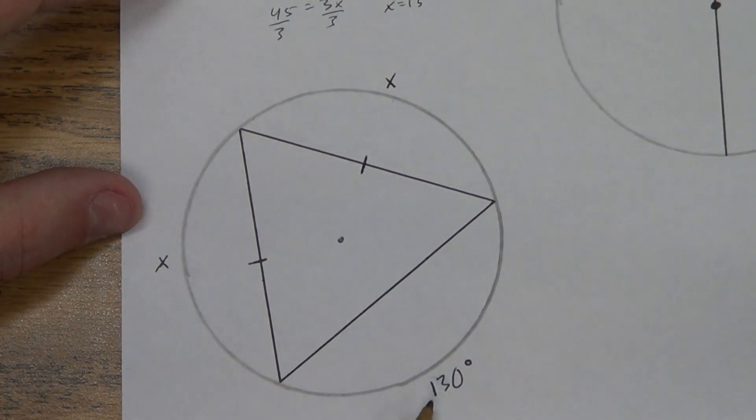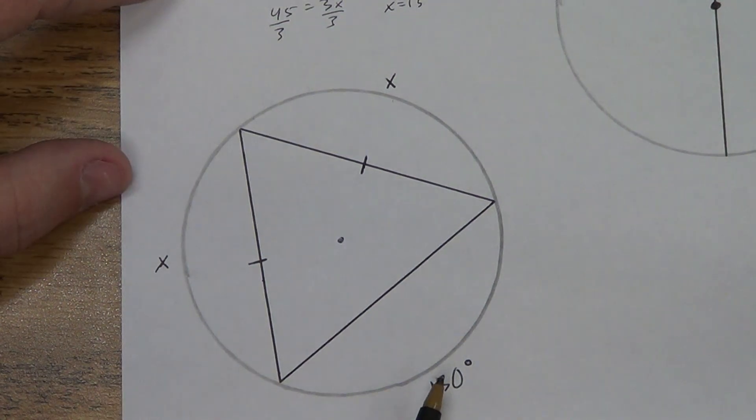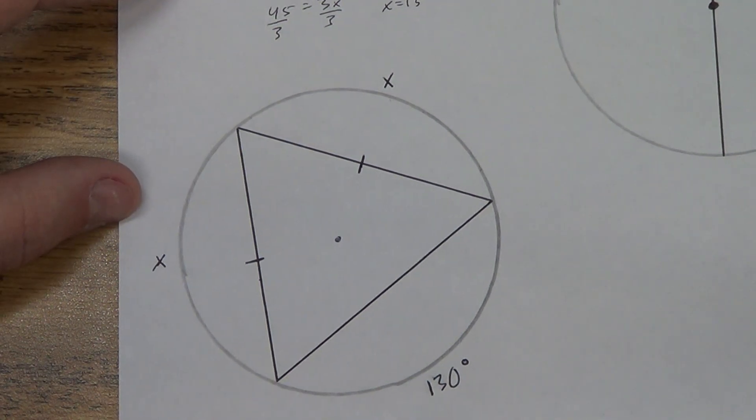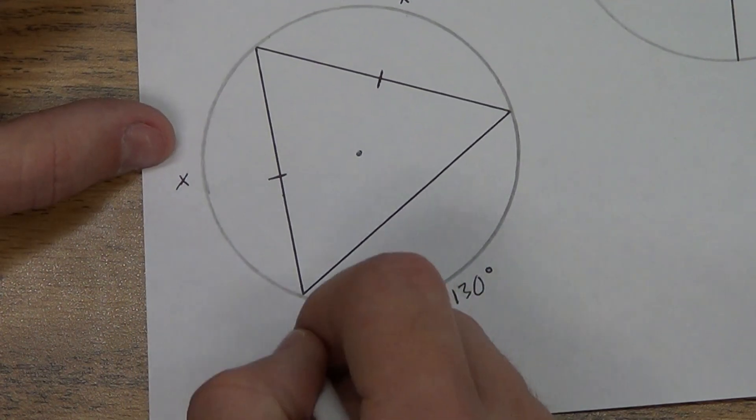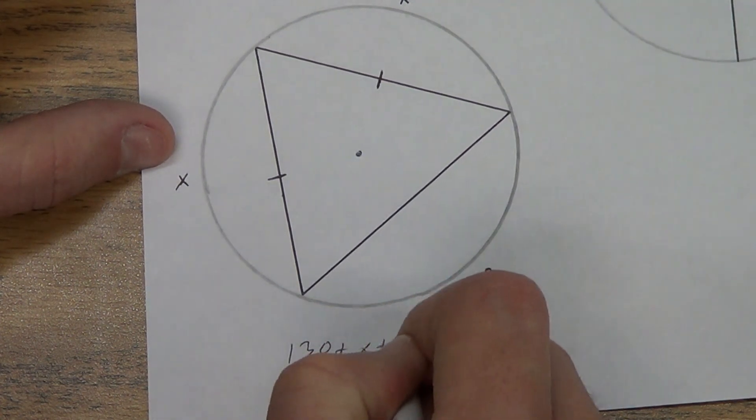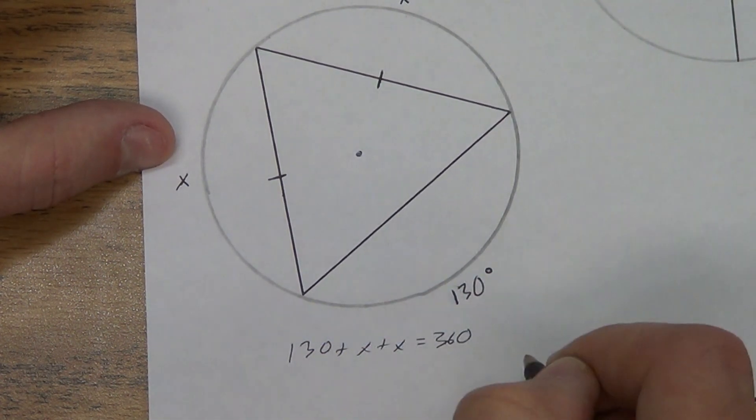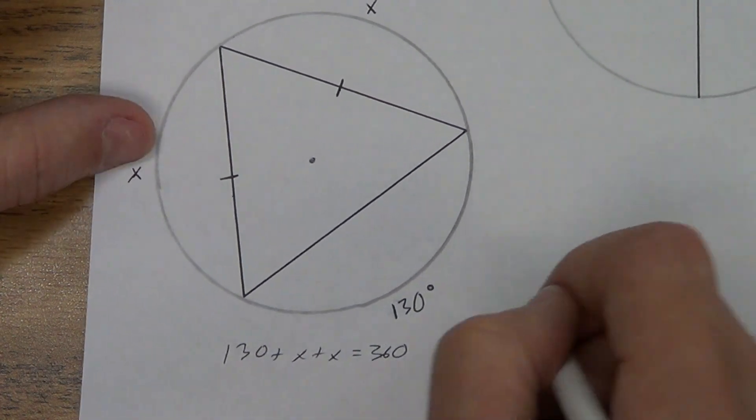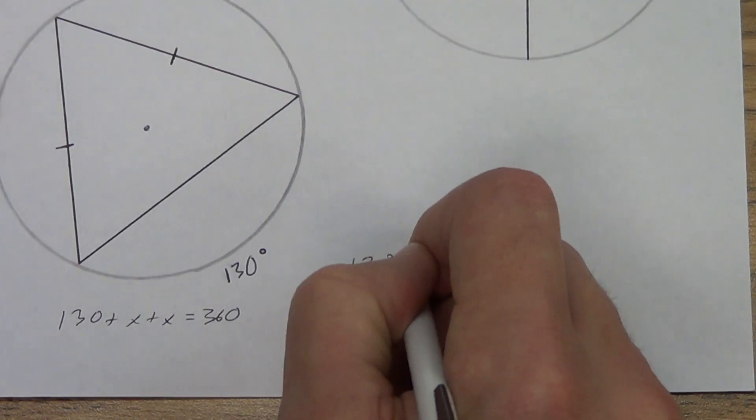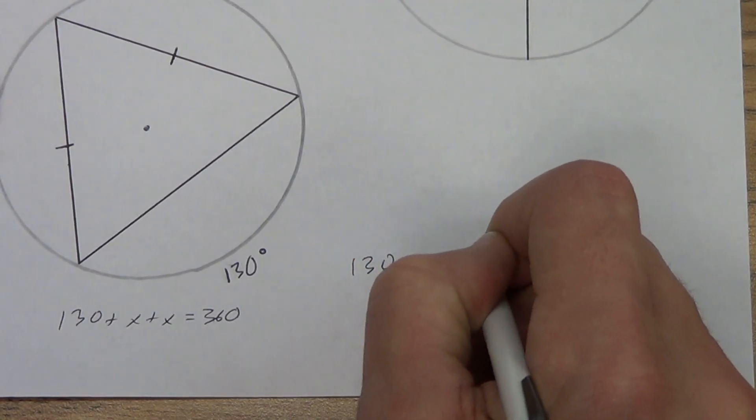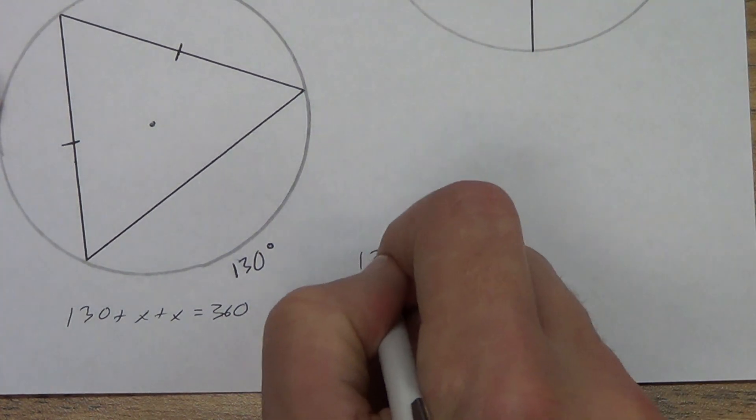Well now I've got this 130 down here. So what do I know about all three arcs? Well, we should know that they add equal 360, right? So 130 plus x plus x equals 360. x plus x is 2x. Every now and then I get some of you who want to write that as x squared. Be careful. Don't make careless mistakes. Subtract that 130.